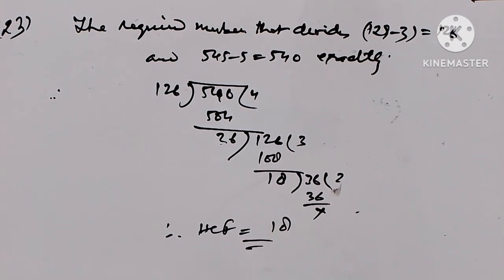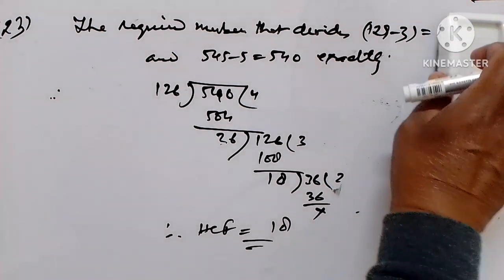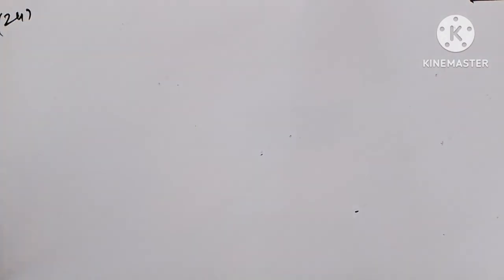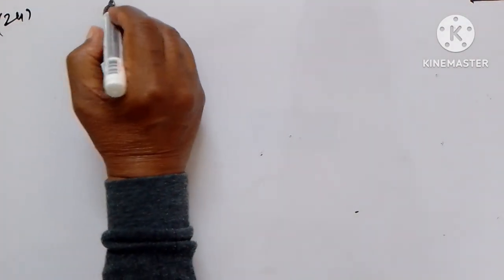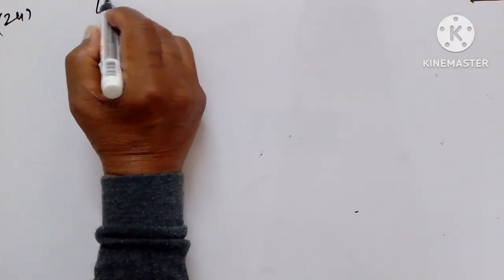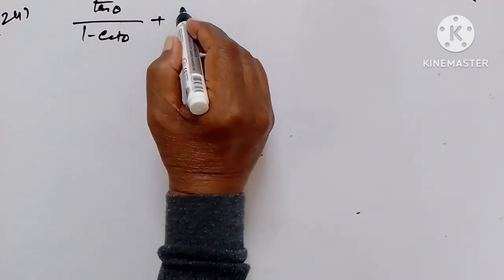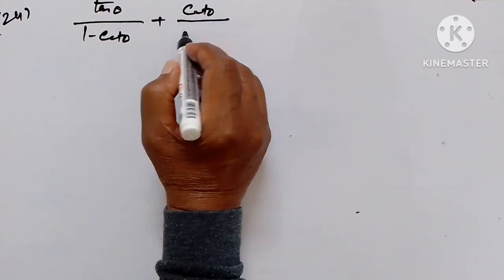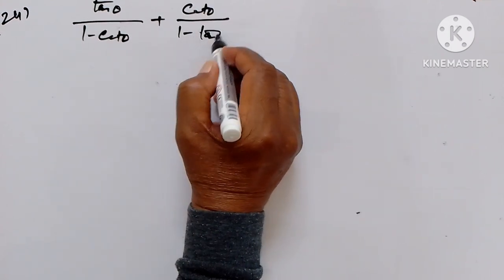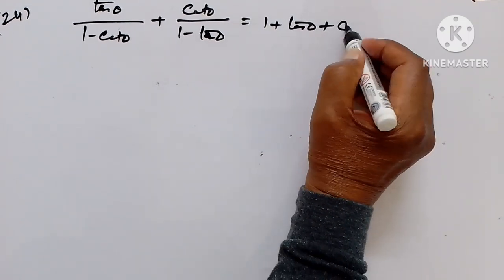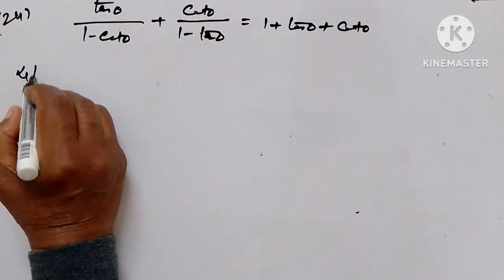This is a very simple question number 23. Now question 24: we have to prove that tan θ / (1 - cot θ) + cot θ / (1 - tan θ) equals 1 + tan θ + cot θ. We take the left-hand side and convert cot θ into 1 upon tan θ.